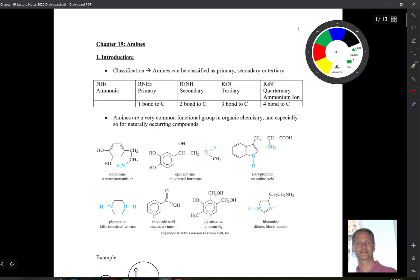If we have one R group here attached to the nitrogen, we have a primary amine. Two R groups is a secondary amine. Three is a tertiary. And four in this case leads to a formal positive charge here, and we call that a quaternary ammonium ion, four bonds.